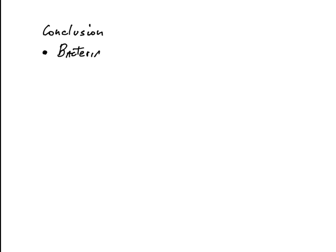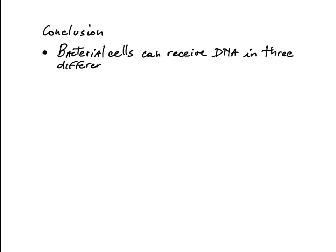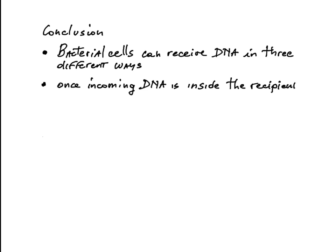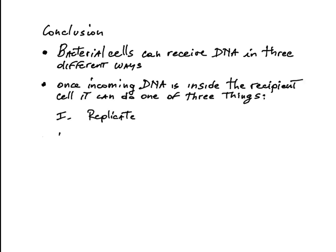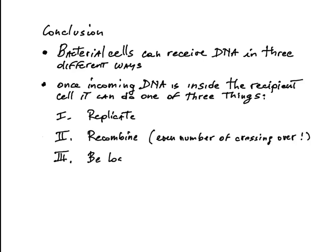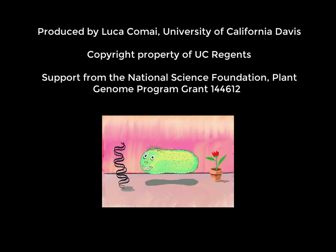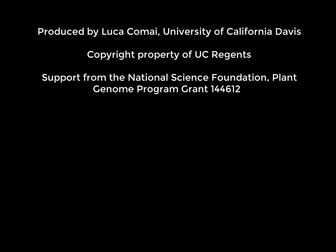Conclusion. Bacterial cells can receive DNA in three different ways. Once incoming DNA is inside the recipient cell, it can do one of three things: first, replicate; second, recombine; third, be lost. Thank you.